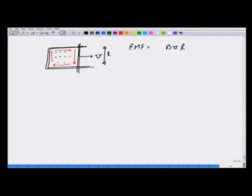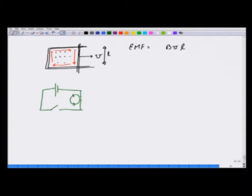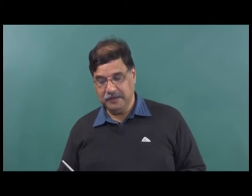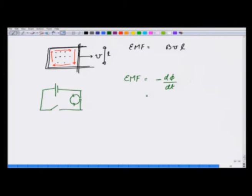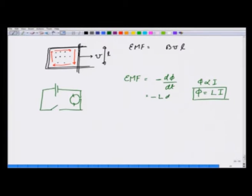Another example: suppose I take a battery, put a switch, and connect it through a coil. When current passes through the coil there is a flux through it, and any change in current changes this flux. The EMF is equal to −dΦ/dt. The flux in such a coil is proportional to the current i, and this proportionality constant is always called the self-inductance L. So this becomes EMF = −L·di/dt.